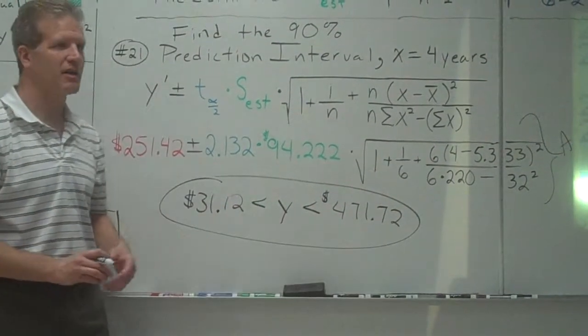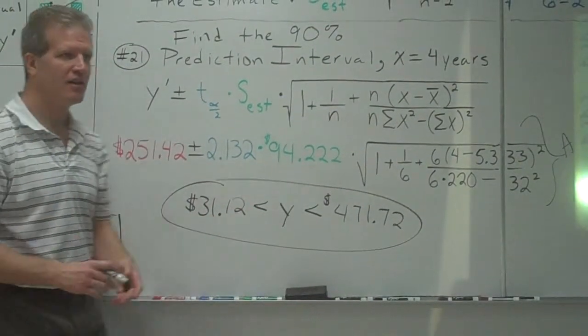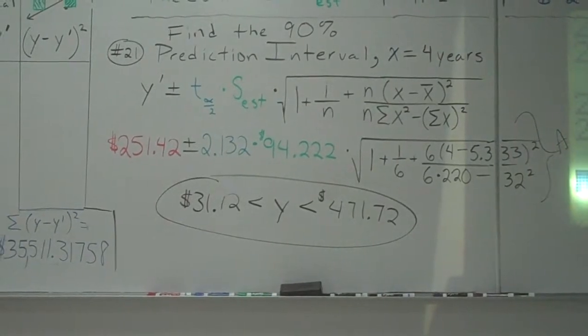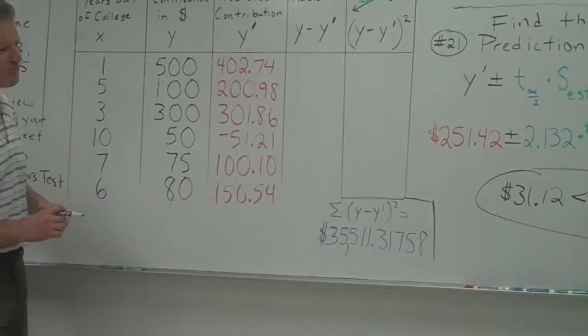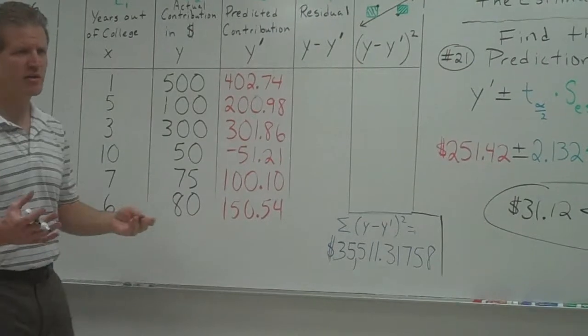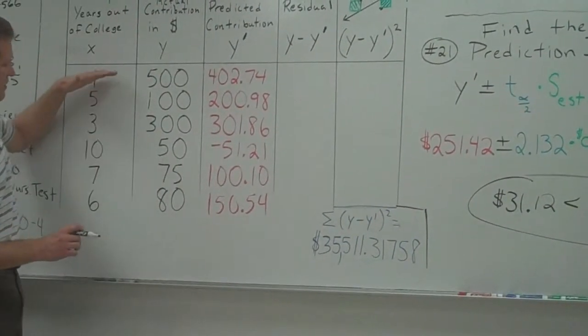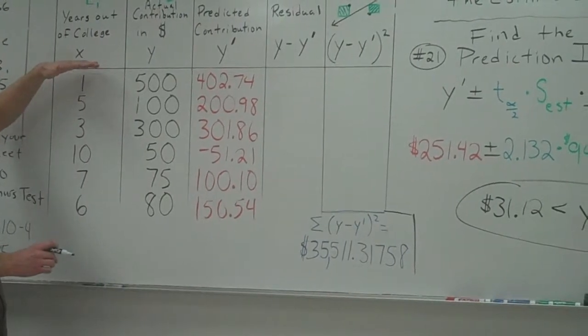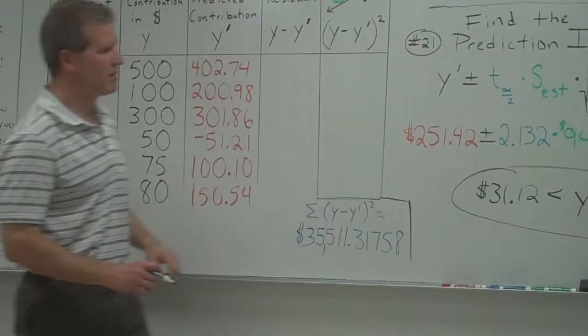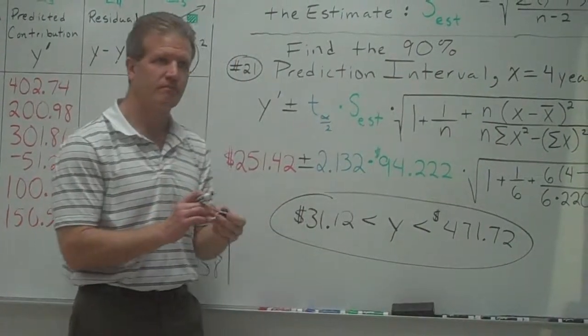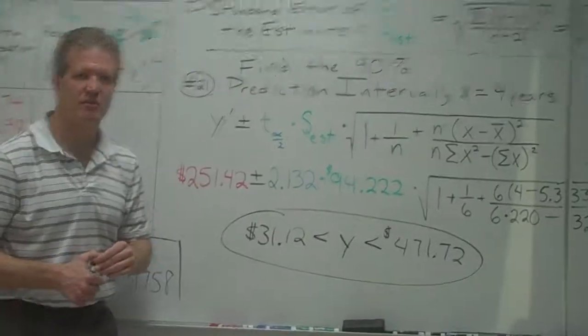So what we're saying is that if a person's been out of college for four years, we're 90% confident that they're going to give back to the college this amount of money. Somewhere between $31.12, $471.72. Pretty wide range. Some people have been asking me, how come these are giving us such a wide range? Well, it's because our sample size is so small. When you only have a small sample size, you're not going to be real exact. If this was maybe 25 instead of 6, that would give us a smaller T score, which would give us a little bit smaller interval. Stop the video now.